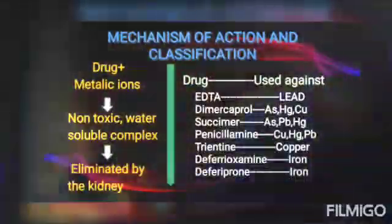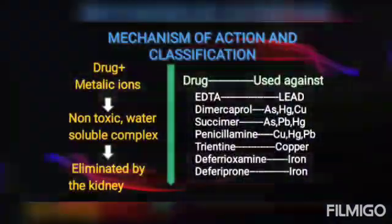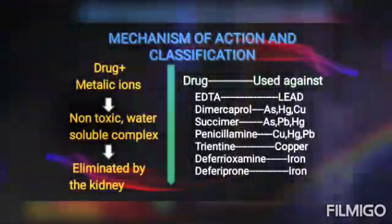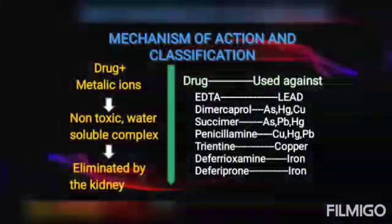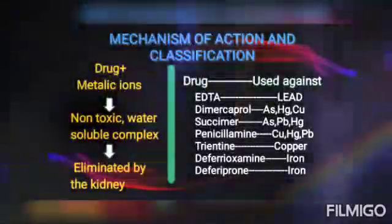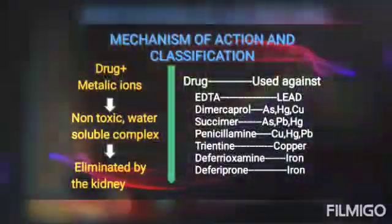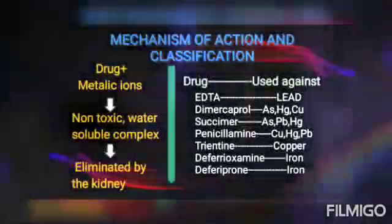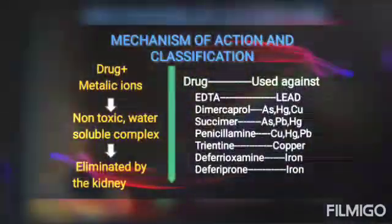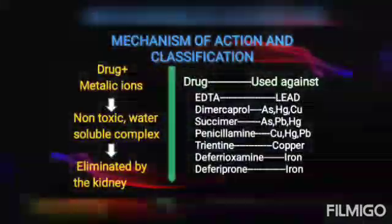Coming to the classification: the drug EDTA, ethylenediamine tetraacetic acid, is used against lead. The drug dimercaprol is used to remove arsenic, mercury, and copper from our body. The drug succimer is used to remove arsenic and mercury. The drug penicillamine is used to remove copper, mercury, and lead. The drug trientine is used to remove copper. The drugs desferrioxamine and deferasirox are used to remove iron from our body.